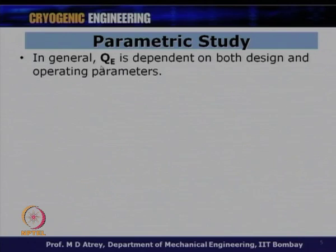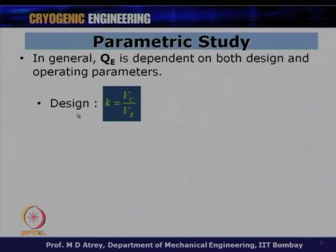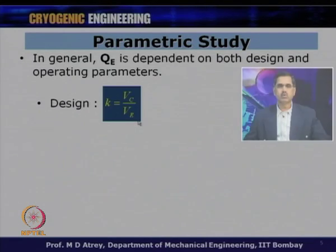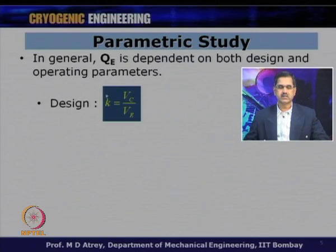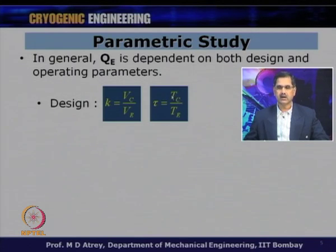QE depends on both design and operating parameters. Design parameters are those which cannot be changed once the design is made — they relate to dimensional aspects. The non-dimensionalized design parameters include K = VC/VE (ratio of two swept volumes), tau = TC/TE (the temperature ratio reflecting the cold temperature the cryocooler is designed for), and once designed for a particular TC, that parameter cannot be changed.